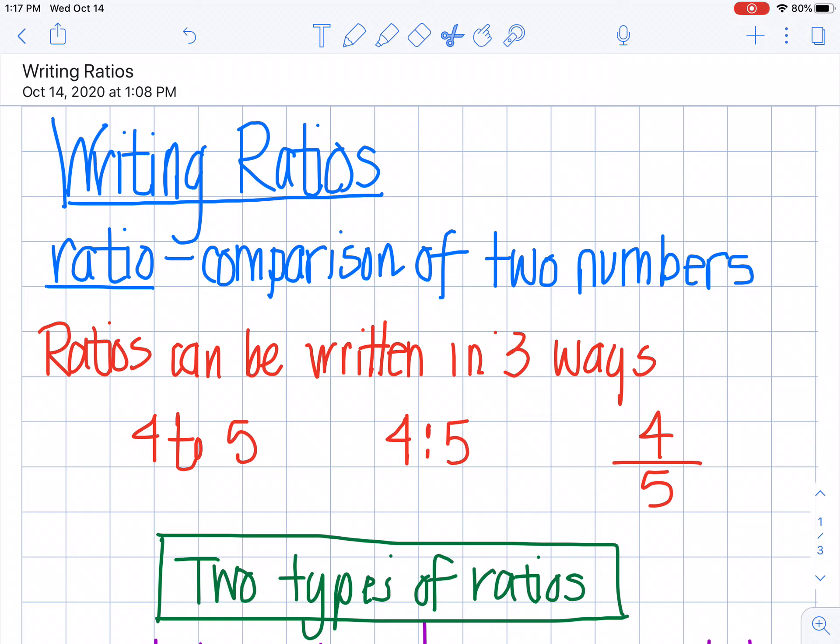I can compare numbers in three different ways. My first way is I can say, and my numbers that I chose to compare are four and five, so I can say four to five. I can use the word to. The word to is the way that I can compare ratios.